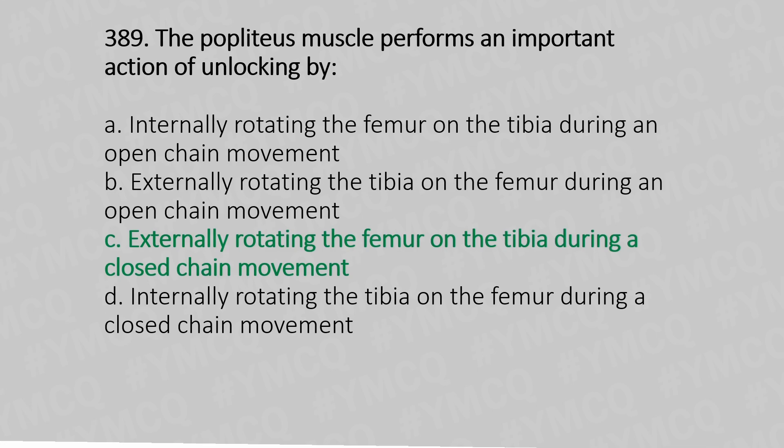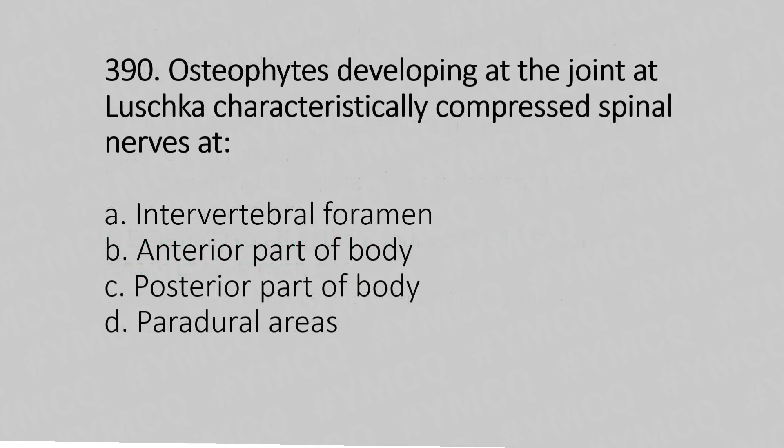Question 390: Osteophytes developing under a joint characteristically compress the spinal nerve at which part? Option A: intervertebral foramen. Option B: anterior part of the body. Option C: posterior part of the body. Option D: epidural areas. The answer is Option A: intervertebral foramen.